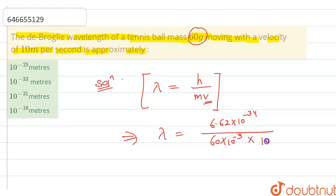When we solve this calculation, we get the answer 1.105 × 10^-33 meters. So this is your answer in terms of 10^-33 meters, which means option 2 will be correct here.